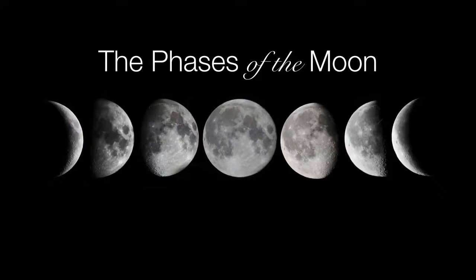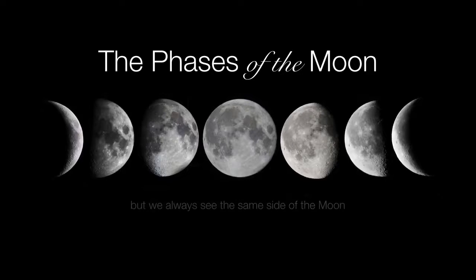Now before we describe the phases of the moon, let's just clarify one rather important point about the moon, and that is we always see the same side of the moon. It doesn't matter what phase it's in. And if you look at the features on the moon's surface, we're always seeing the same near side of the moon.